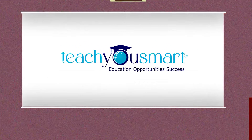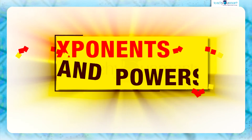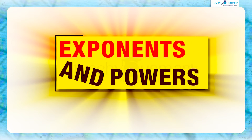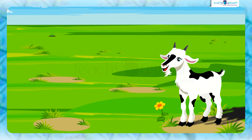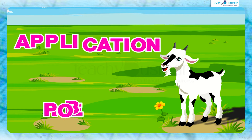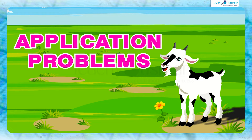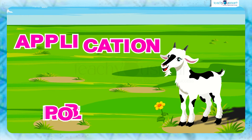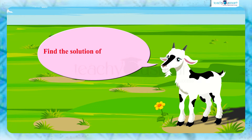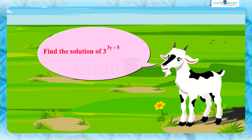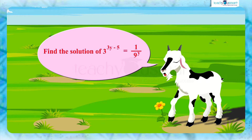Hello students, welcome to Teach You Smart. Let's continue our journey through exponents and powers. Today we're going to solve some more problems based on the laws of exponents. Let's start with an example: find the solution of 3 raised to (3y minus 5) equals 1 by 9 raised to y.